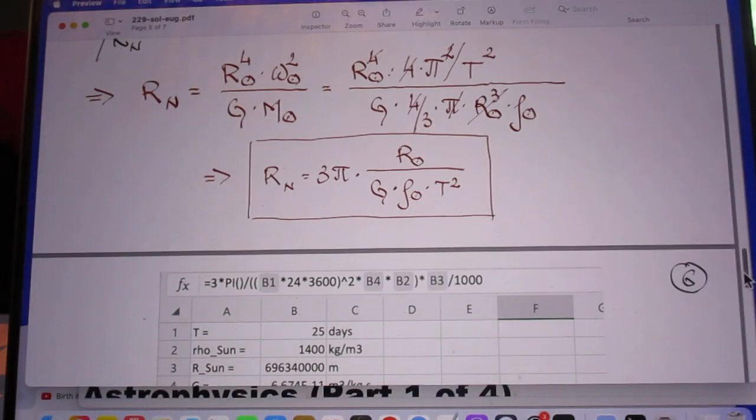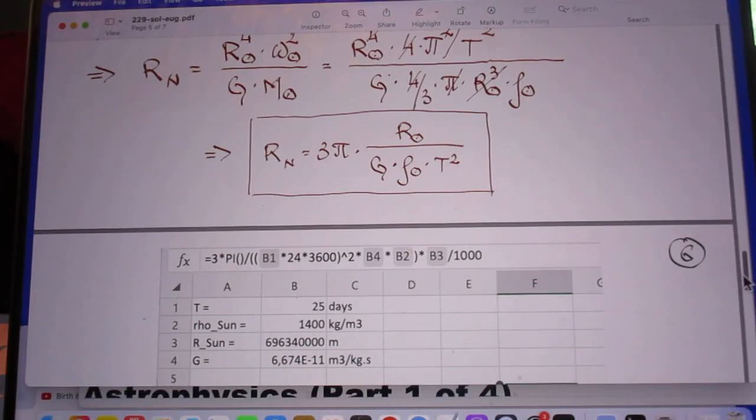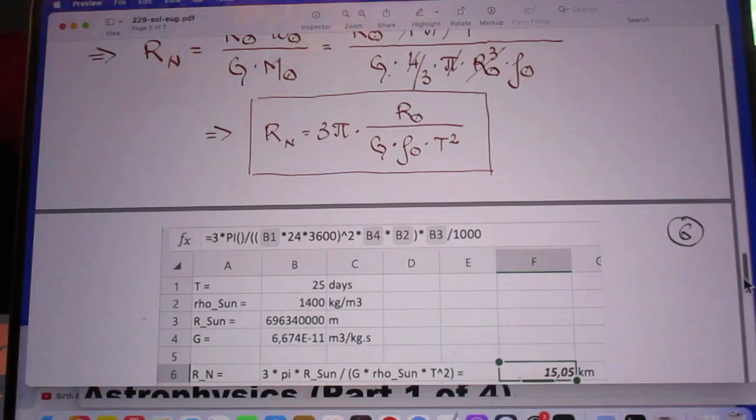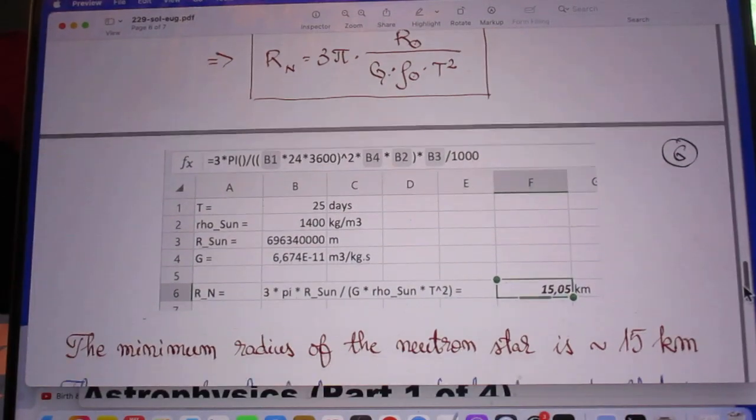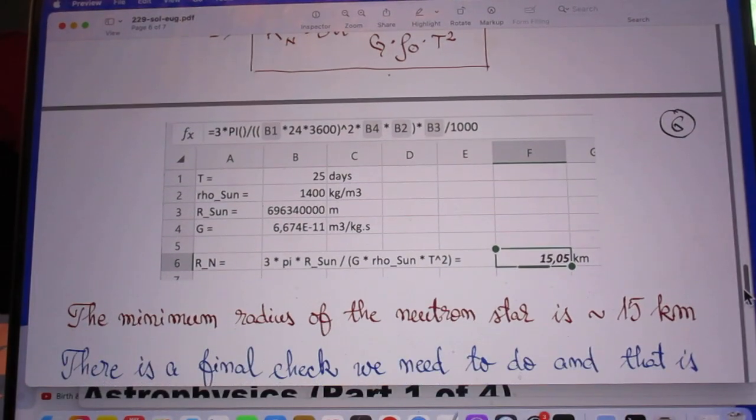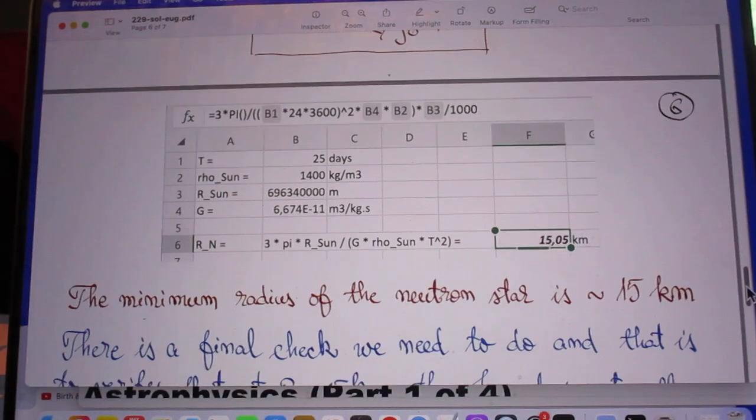And then he calculates the radius for which that happens. And that happens when the radius of the neutron star is about 15 kilometers.